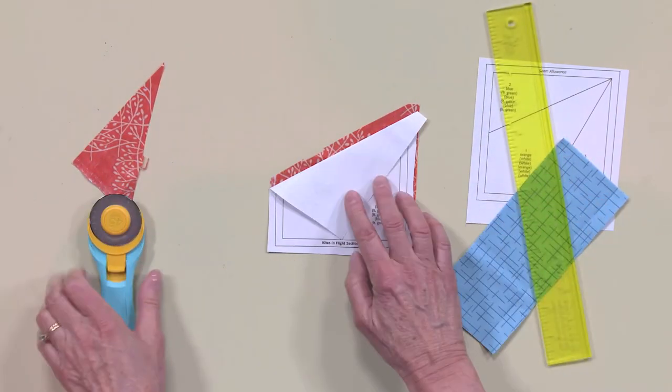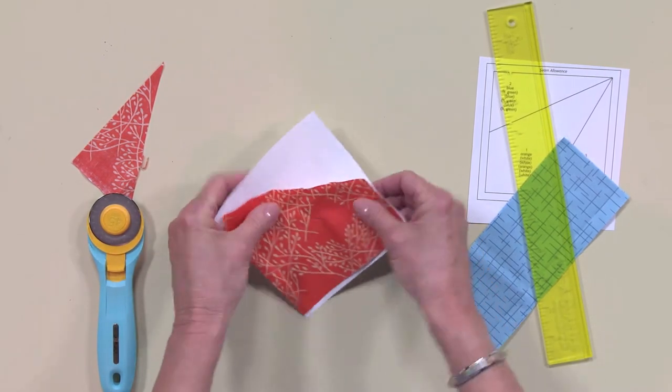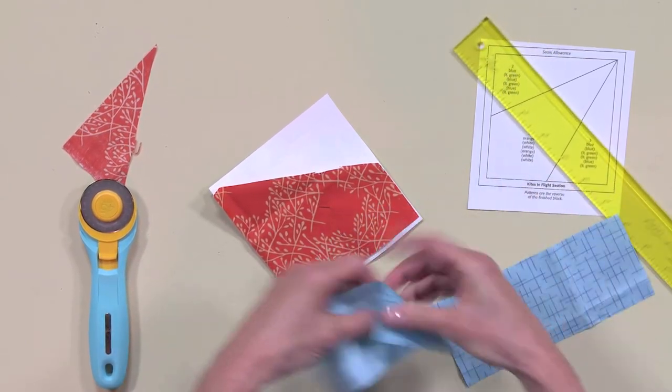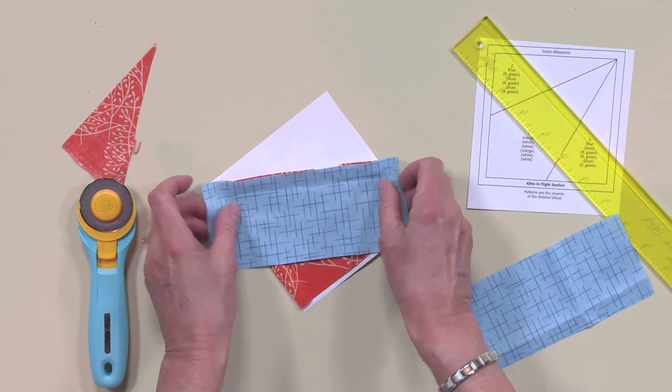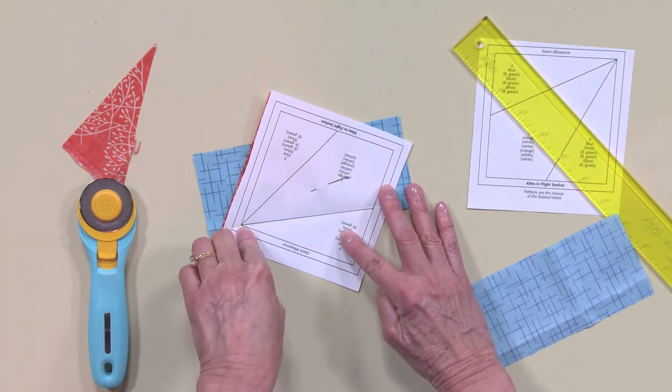So what that does is give me a seam allowance now to match up my number two fabric. So I'll flip it back over, and then align number two on top, and then I can go ahead and sew. I'll flip it back over and sew on the seam line.